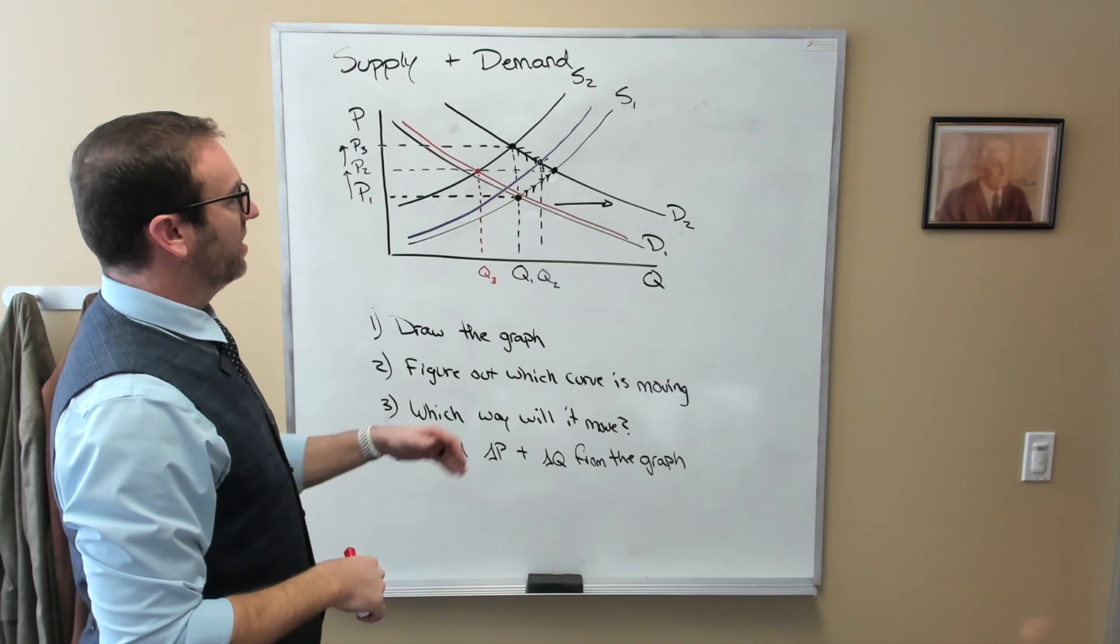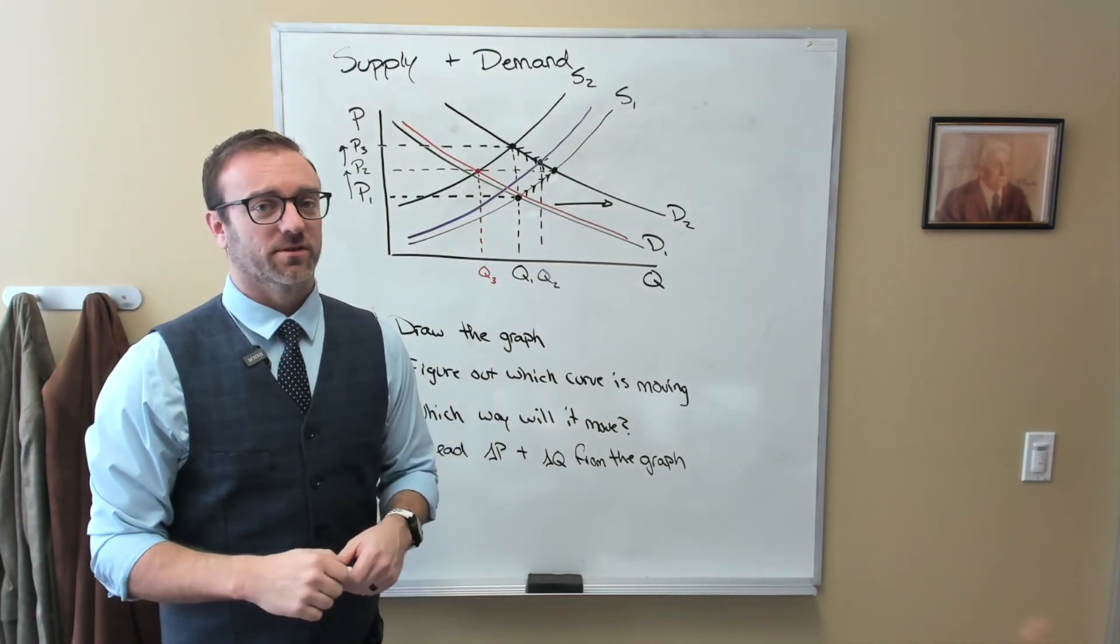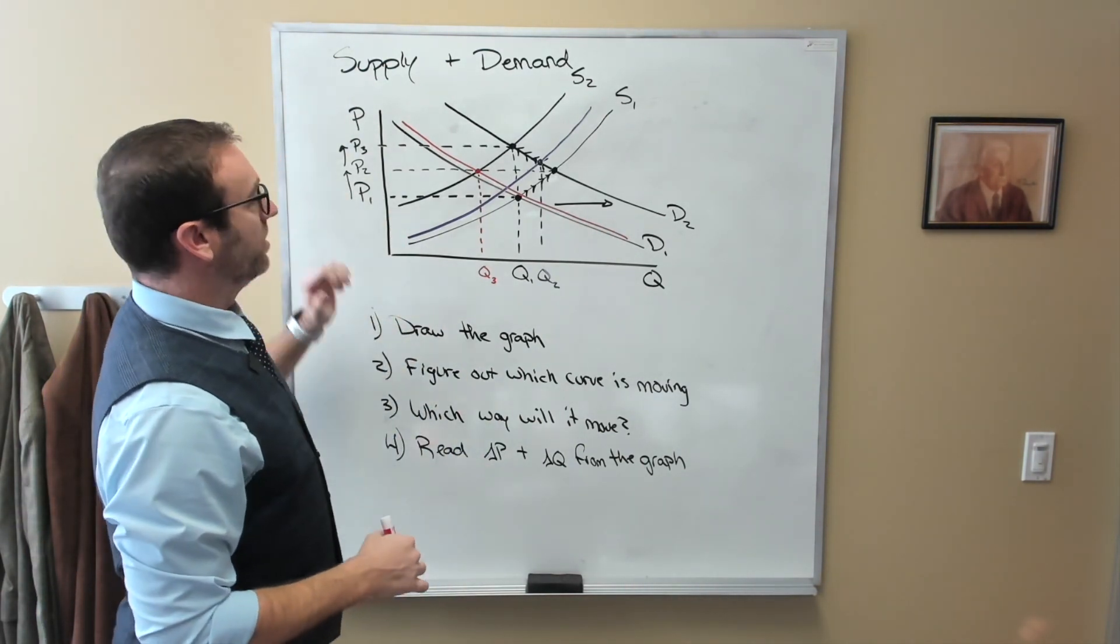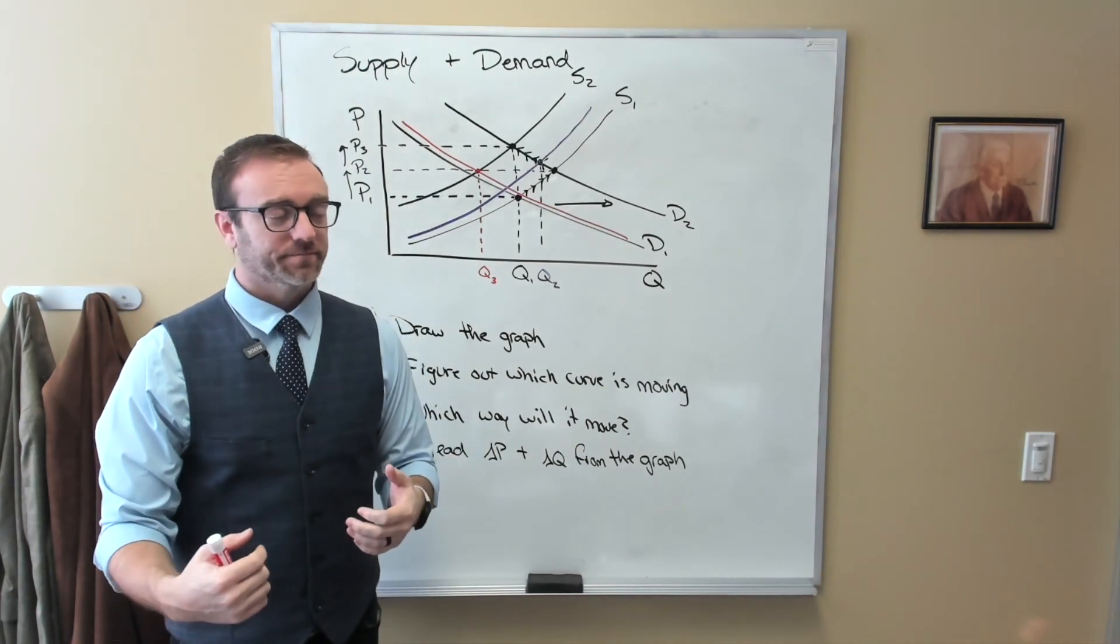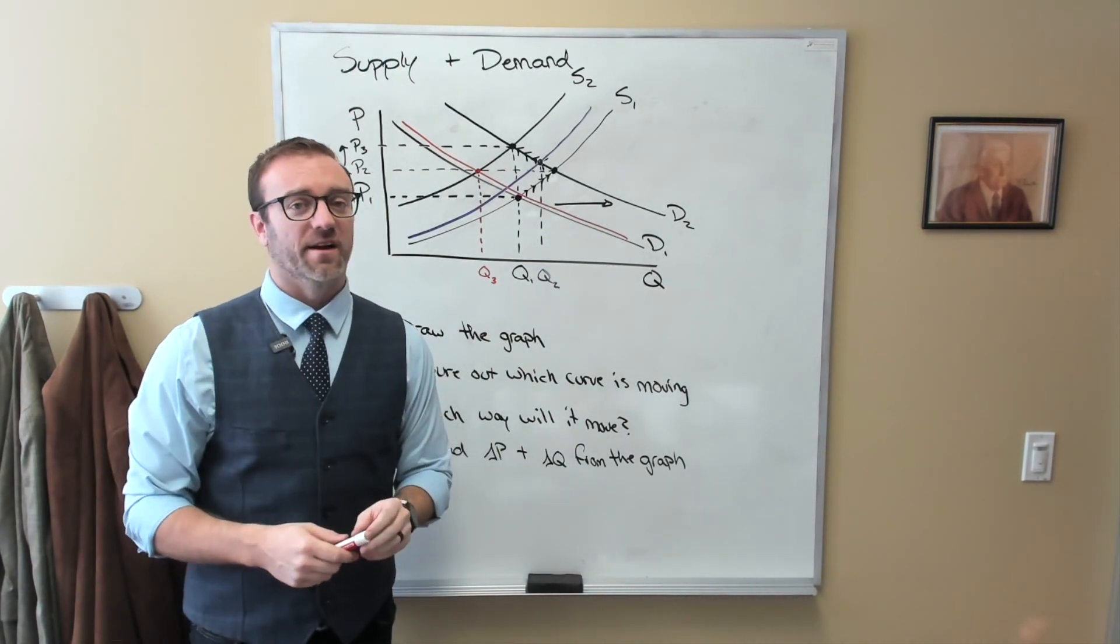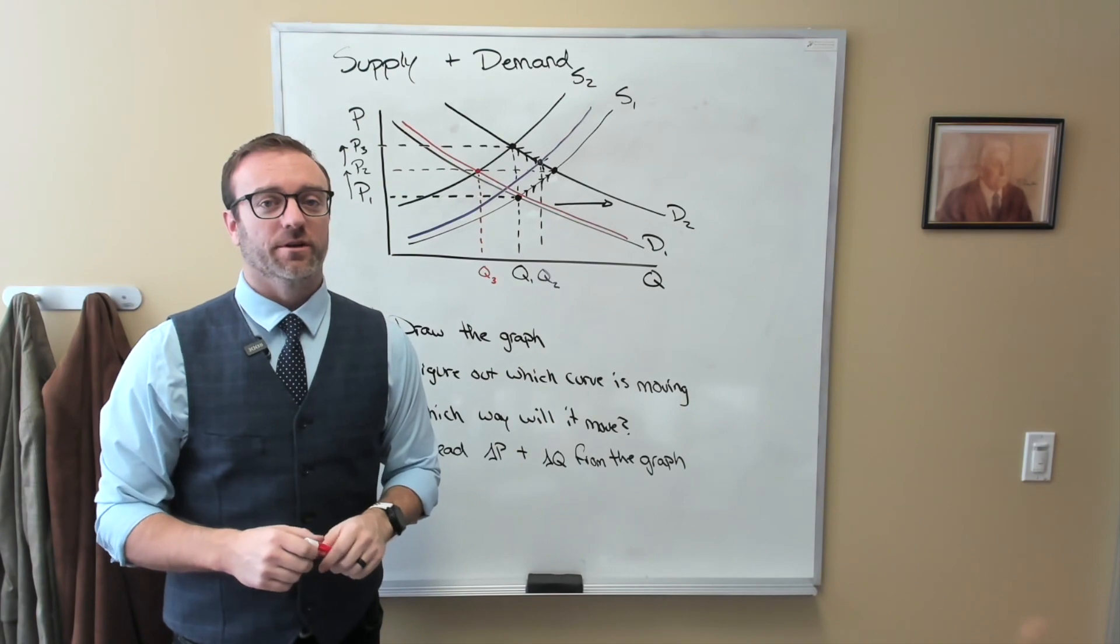So in this case, when the curves are moving in opposite directions, the change in price is going to be very clear. The change in quantity, however, is not going to be clear at all.